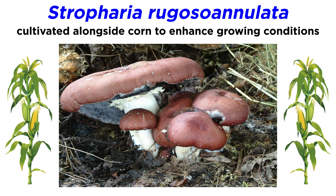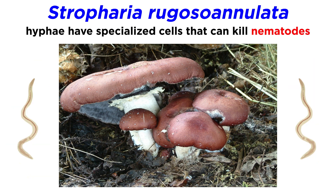Historically, Stropharia rugosannulata was cultivated alongside corn to enhance the soil nutrient composition and growing conditions. The hyphae of this species have specialized cells that can kill nematodes, which are microscopic worms.